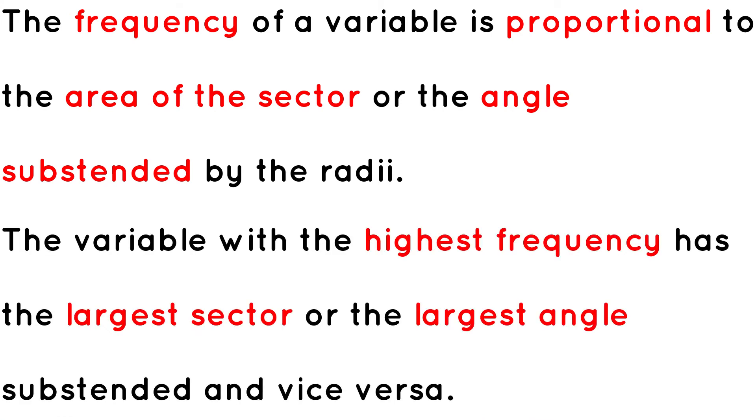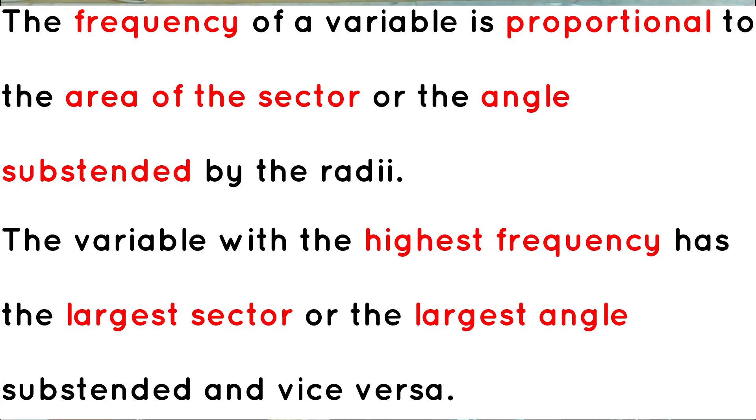So that simply implies that the variable with the highest frequency is going to have the highest area of sector or the largest angle subtended by the radius, and the variable with the lowest frequency is going to have the lowest area of sector and the lowest angle subtended by the radius. When using a pie chart, the frequency of the variable can be represented by the area of the sector or by the angle subtended by the radius. There's a formula for sketching our pie chart in terms of area of sector or in terms of angle subtended. Let's go into our worksheets to see how it's done.